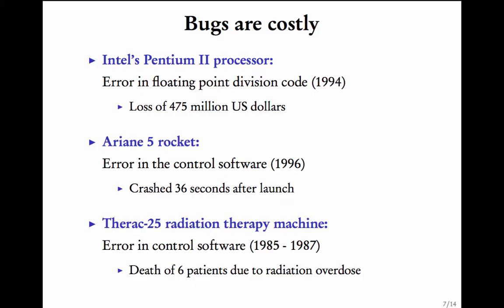Let me give you an idea of some famous errors which have had dramatic consequences. In 1994, an error in the floating point division of Intel's Pentium processor caused a loss of $475 million for the company. In 1996, an error in the control software of the Ariane-5 rocket made it crash 36 seconds after its launch. In the years 1985 to 1987, an error in the control software of a radiation therapy machine caused the death of six patients due to radiation overdose.